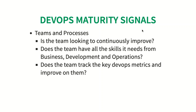Typical key DevOps metrics include deployment frequency — how frequently are you deploying to production — time to market — how long it takes to build a new feature and take it to production — and lead time between fixes — how long it takes to fix an important bug and put it live to production.